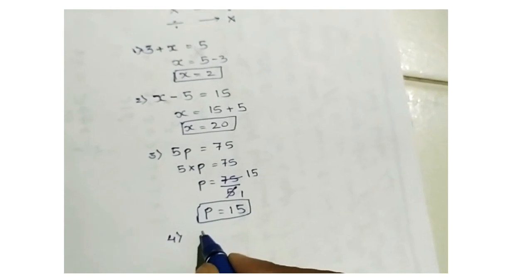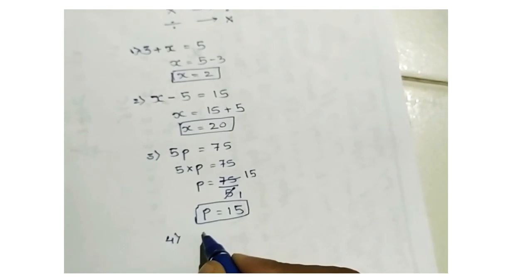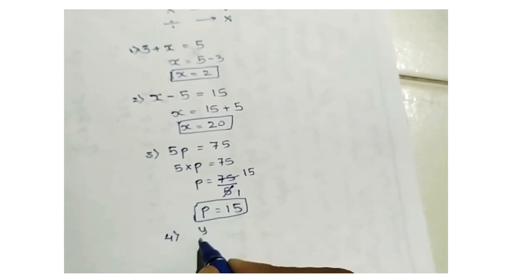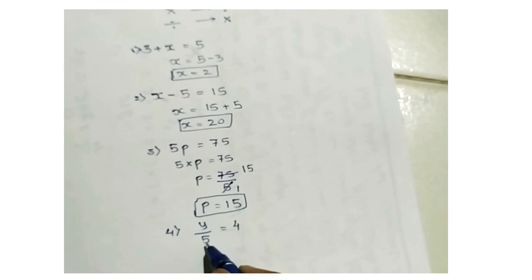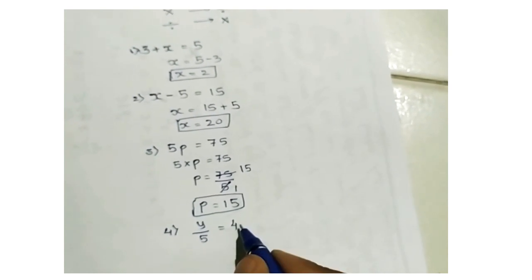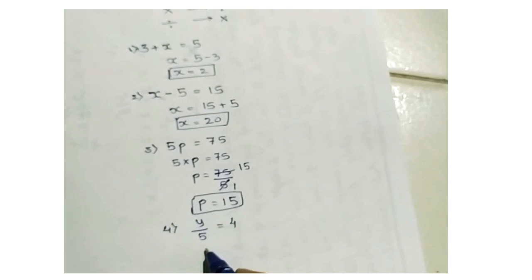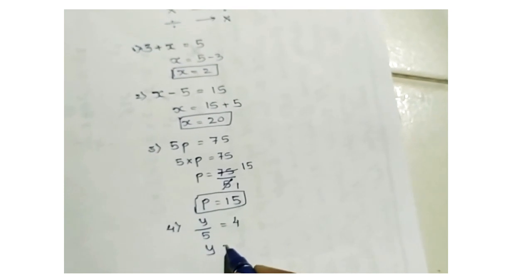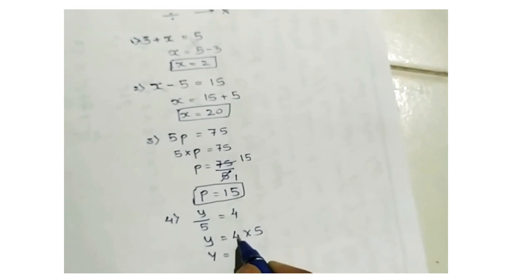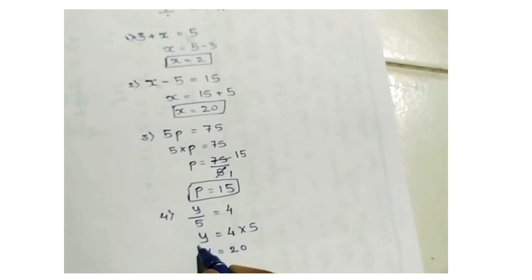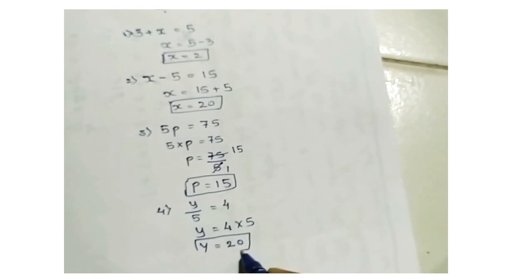Let's take the fourth example: y by 5 gives us 4. Here 5 is dividing. If I take it to the right side it becomes multiplication. So y equal to 4 into 5, so y equal to 20.